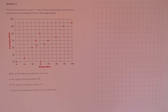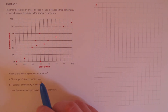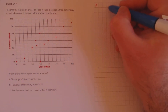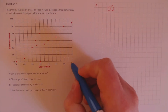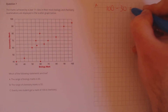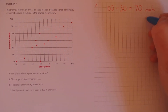Question 7. The marks achieved by the year 11 class in their mock biology and chemistry examinations are displayed in the scattergraph below. Which of the following statements are true? Statement A: the range of biology marks is 60. To calculate the range we take the highest value from the lowest: the highest biology mark is 100 and the lowest is 30, so the range is 70. That statement is false.